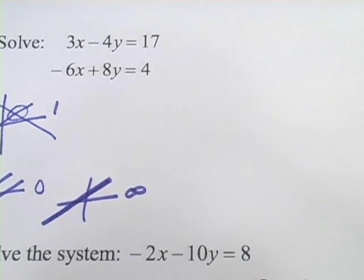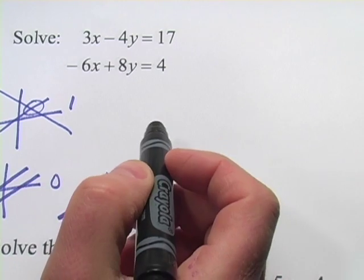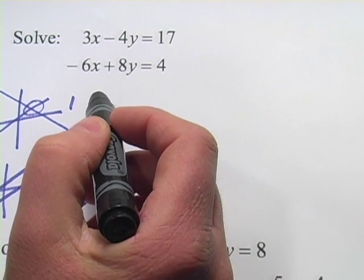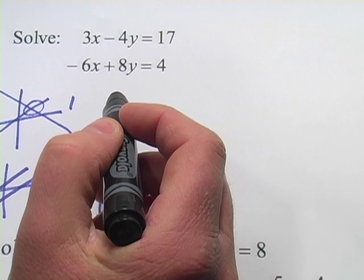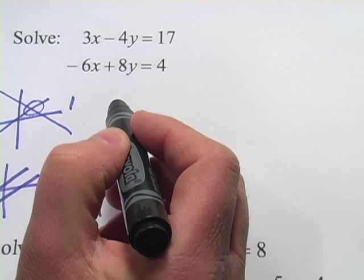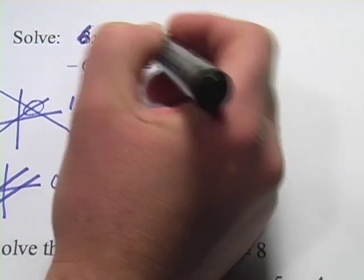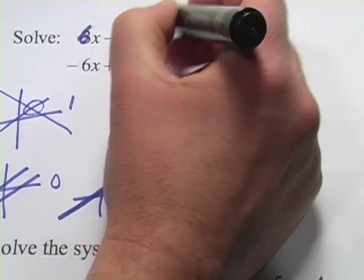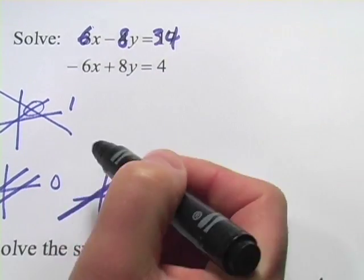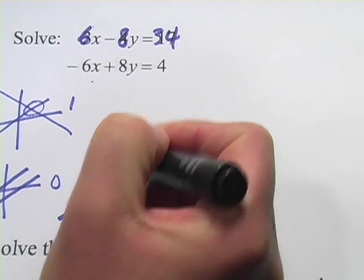Let's take a look at how that turns out when we're trying to solve them algebraically. This one is set up in such a way that elimination would be an easy way to go about it. If I multiply the top equation by 2, we would get 6x, negative 8y, and 34. And now when I add these together, these x's disappear and...